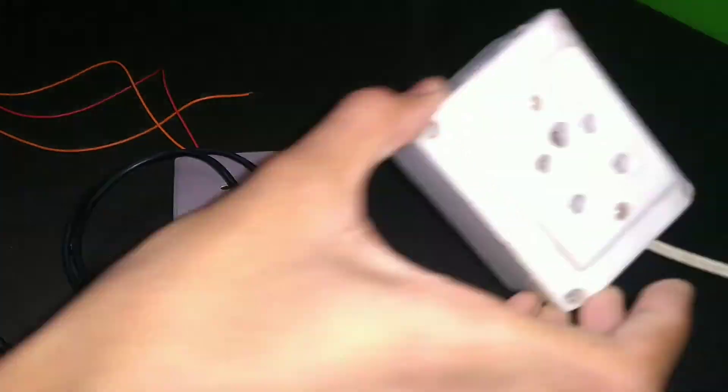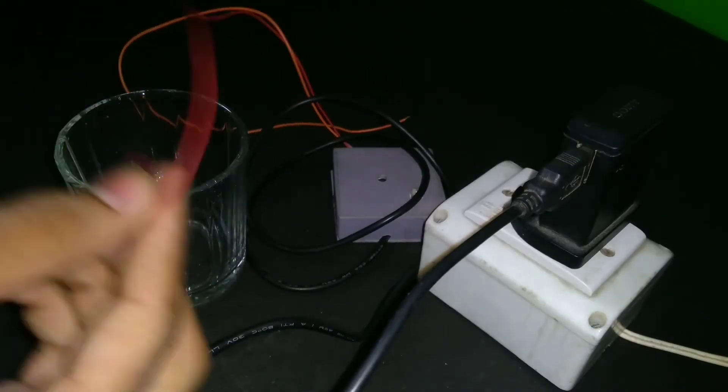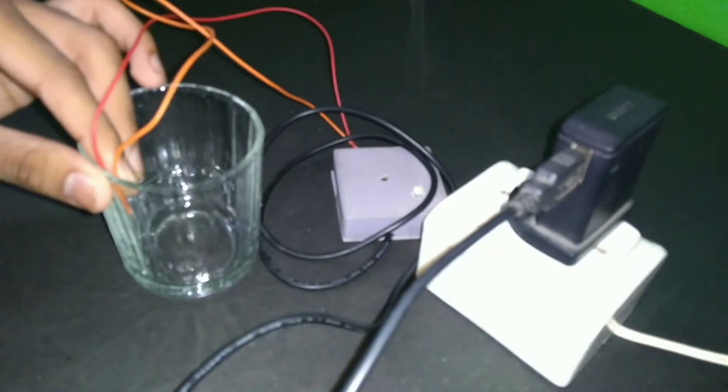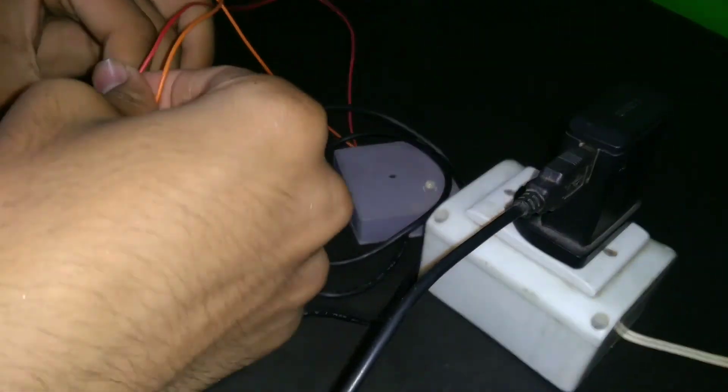So let's test it. I connect the USB cord to my mobile charger and plug it into my extension board. After plugging in, I attach the sensing wires to the glass for testing with the help of electric tape. I turn on the water power switch.